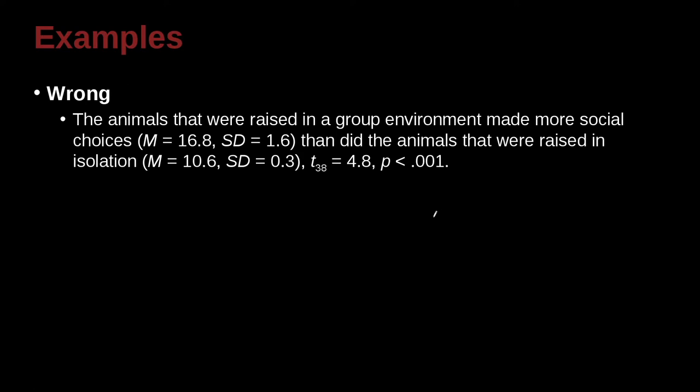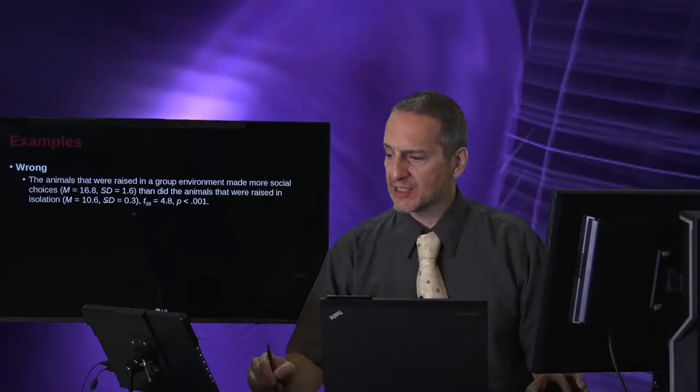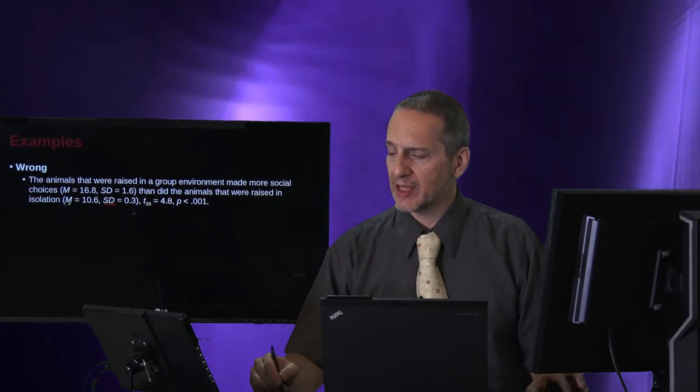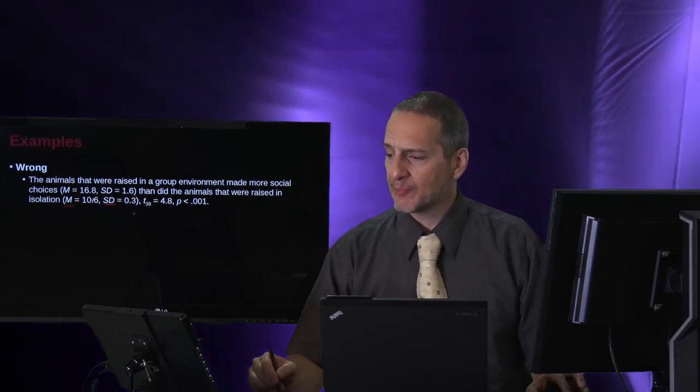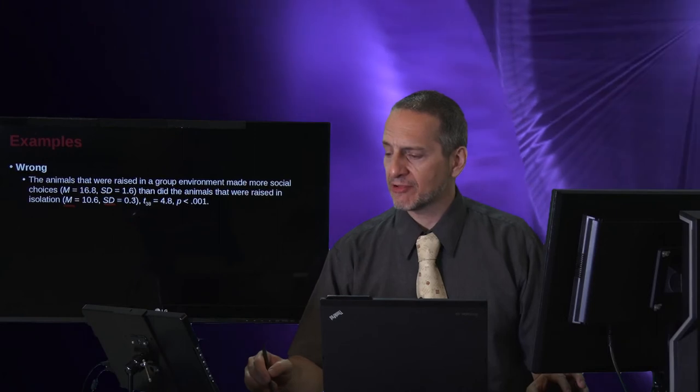The animals that were raised in a group environment made more social choices, mean equals 16.8, standard deviation 1.6, than did the animals that were raised in isolation, mean 10.6, standard deviation 0.3, t38 which is the t-test equals 4.8 with the probability of 0.001. Here what we have is the SD is the standard deviation. The M is the mean, capital M, SD in the italics. That's correct.